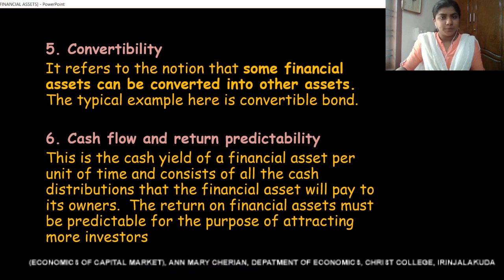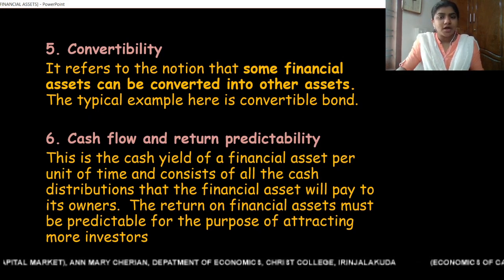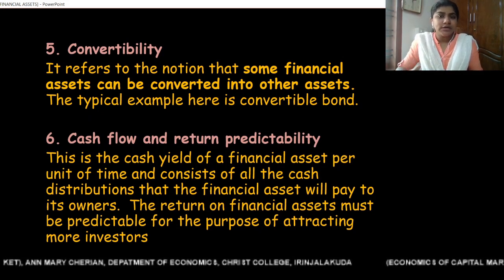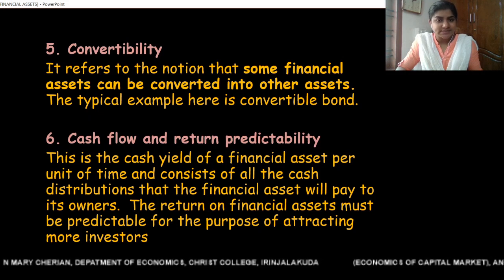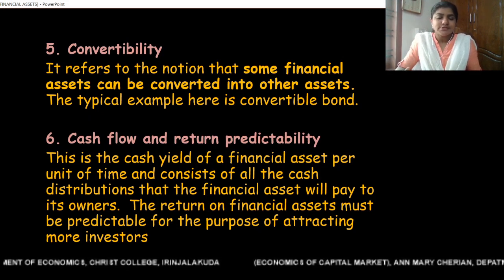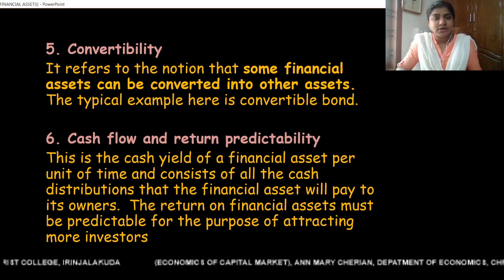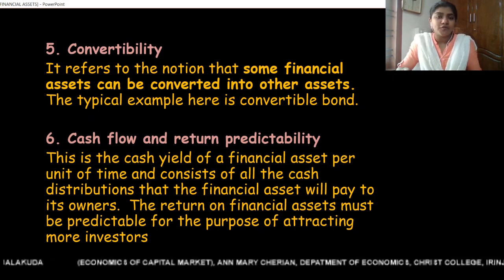The fifth property is convertibility. Convertibility refers to the notion that some financial assets can be converted into other assets. The typical example is convertible bonds, where bonds can be converted into equity shares. There are also certain preference shares that can be converted into equity shares. This property of certain financial assets is known as convertibility.